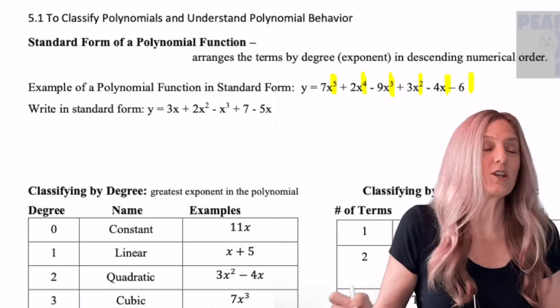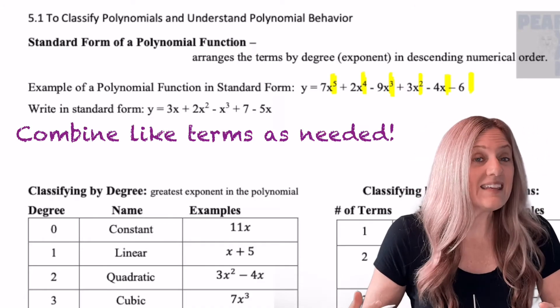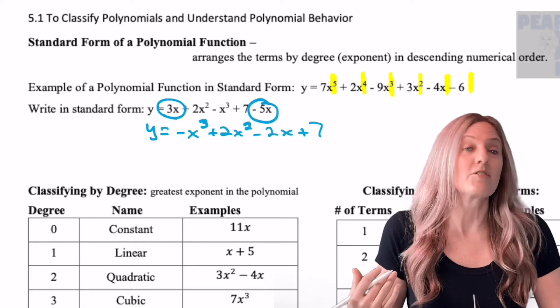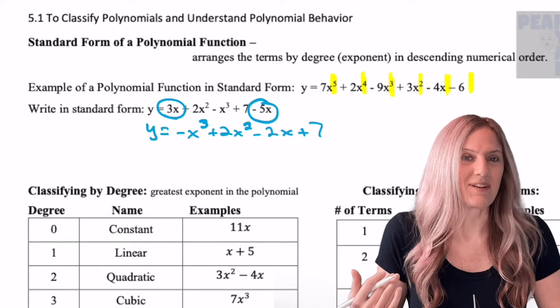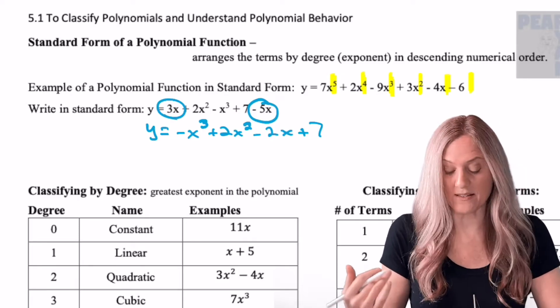We give one for you to try out. Write the example in standard form. If there's anything to be combined, do that first. From least to greatest by exponent: negative x cubed plus 2x squared minus 2x plus 7.